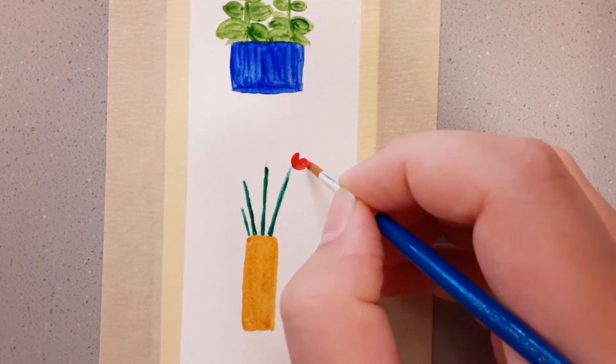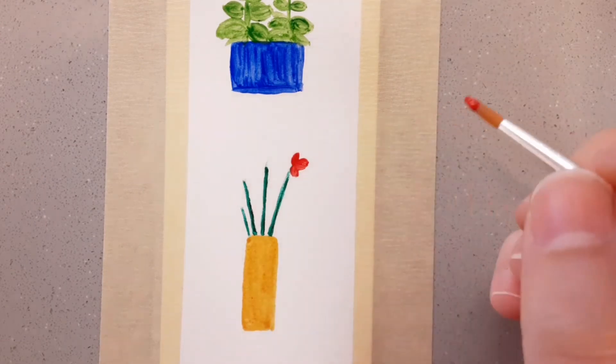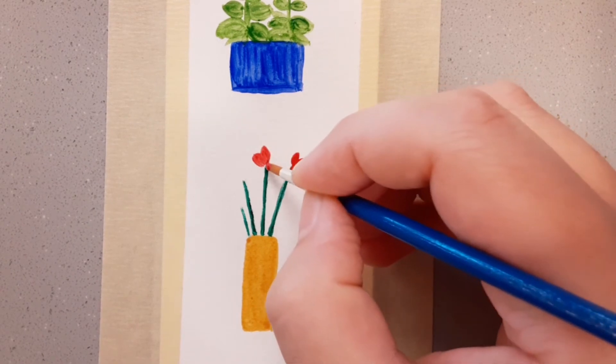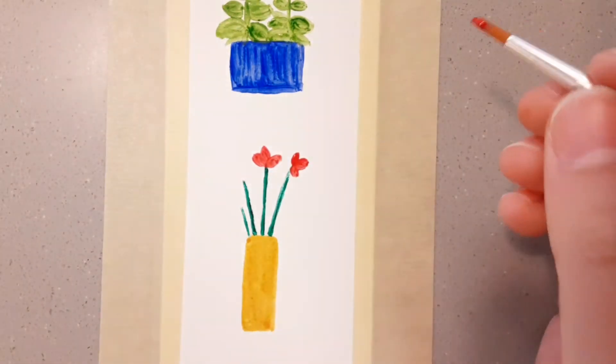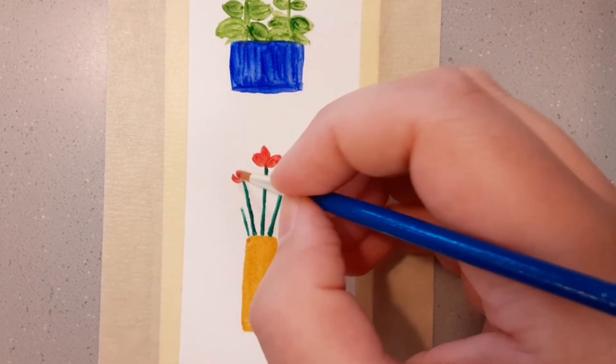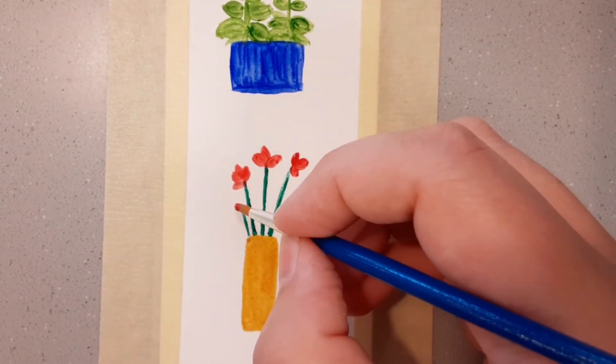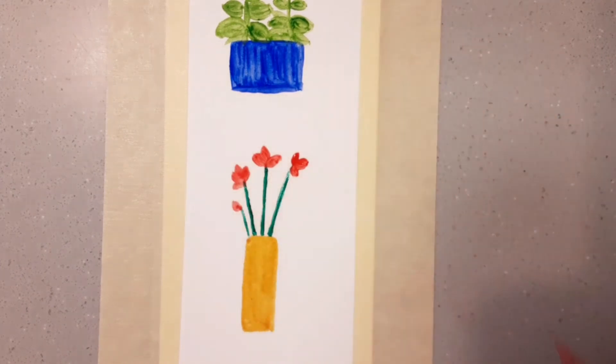Then I use a red orange to make teardrop shapes again. I give each flower different varying amounts of petals so that they look different and natural, and one little baby bud on the last flower just like that one hasn't bloomed yet.